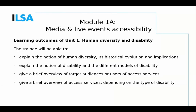At the end of Unit 1, students should be able to explain what human diversity is, how it has evolved over time, and what the social and contextual implications of human diversity are. Students should also be able to explain the notion of disability — describing the different disability models such as the medical model and the social model, and the language used in these models. In addition, students should be able to enumerate the different target audiences that might ask for access support, such as people with sensory, physical, or mental and intellectual impairments, and know the types of access support that can be provided.